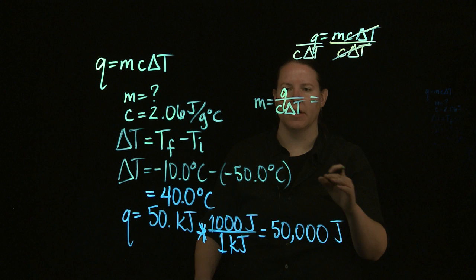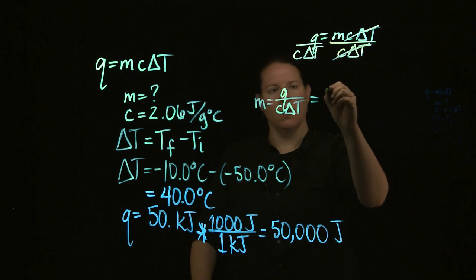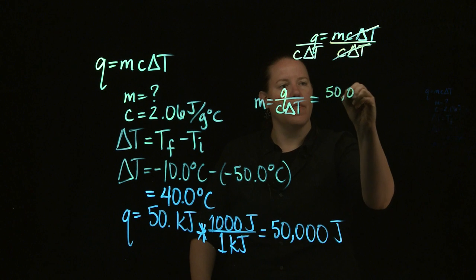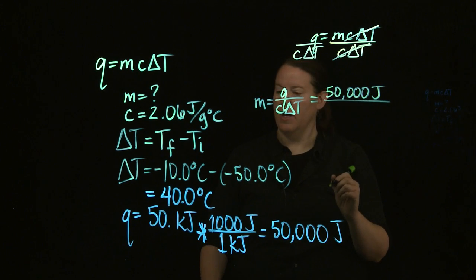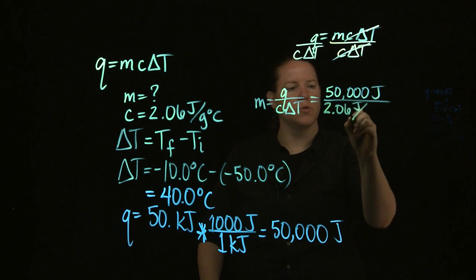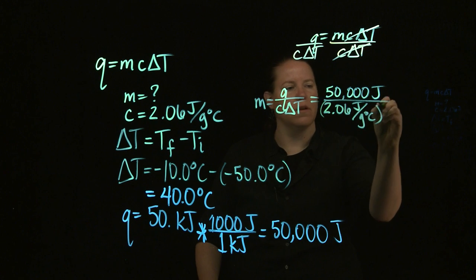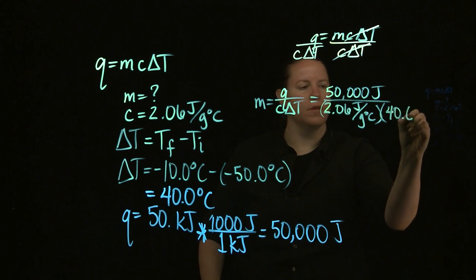Let's plug in our numbers. Now is the time for plugging and chugging. Now I have mass alone. So here we go. I got 50,000 joules and a very squeaky marker. And 2.06 joules per gram degrees Celsius. And I have 40 degrees Celsius that I put for delta T.